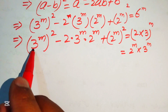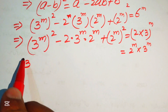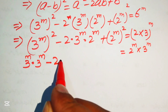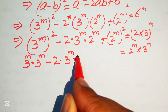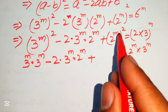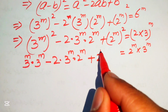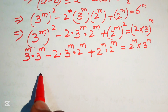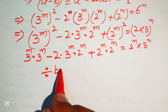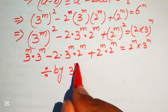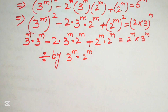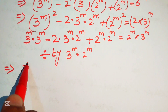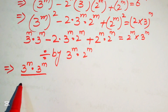We rewrite (3^m)² as 3^m · 3^m, and (2^m)² as 2^m · 2^m. Now we divide both sides by 3^m · 2^m. After dividing, we write the equation as: (3^m · 3^m)/(3^m · 2^m) - 2·(3^m · 2^m)/(3^m · 2^m) + (2^m · 2^m)/(3^m · 2^m) = (2^m · 3^m)/(3^m · 2^m).